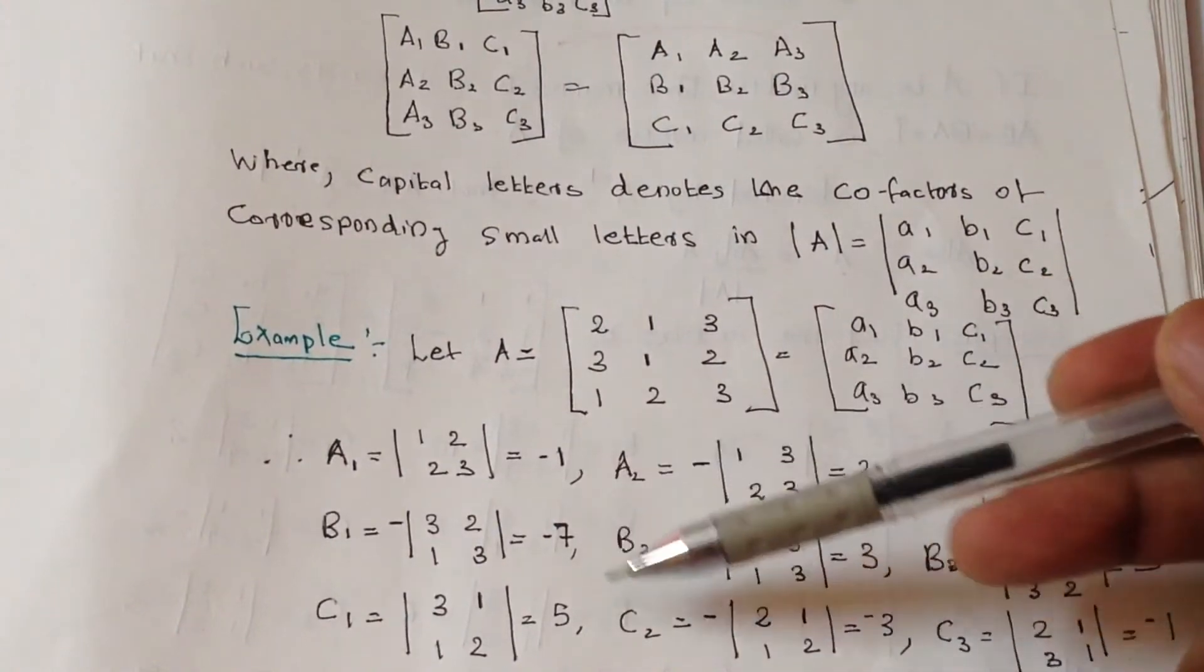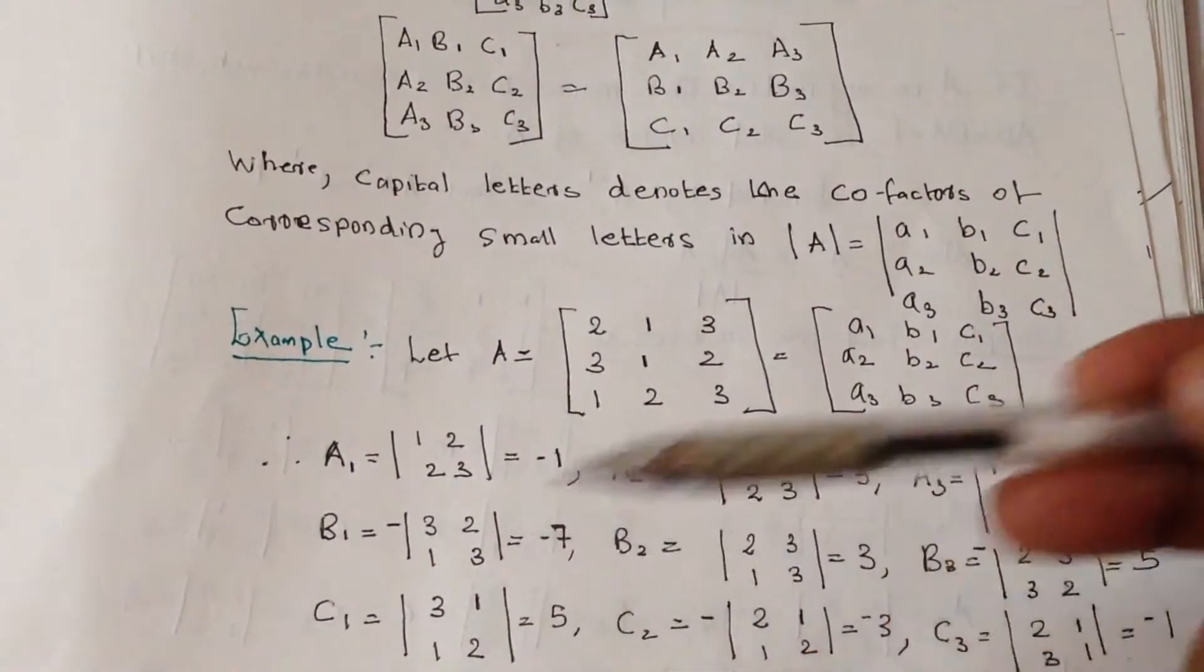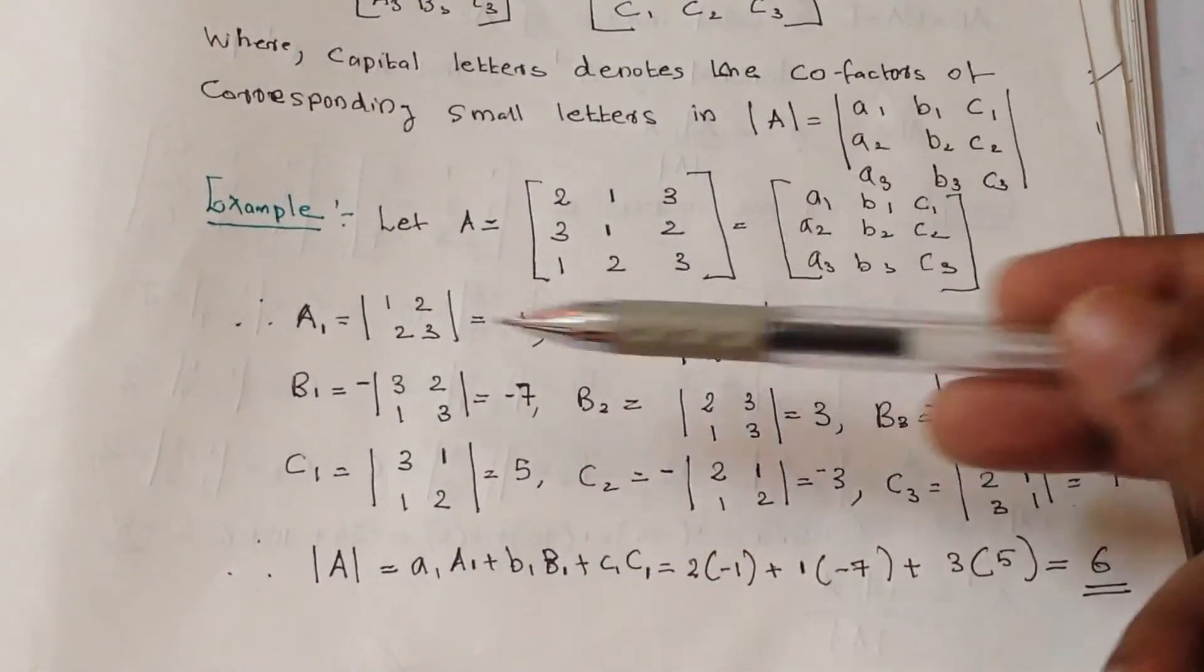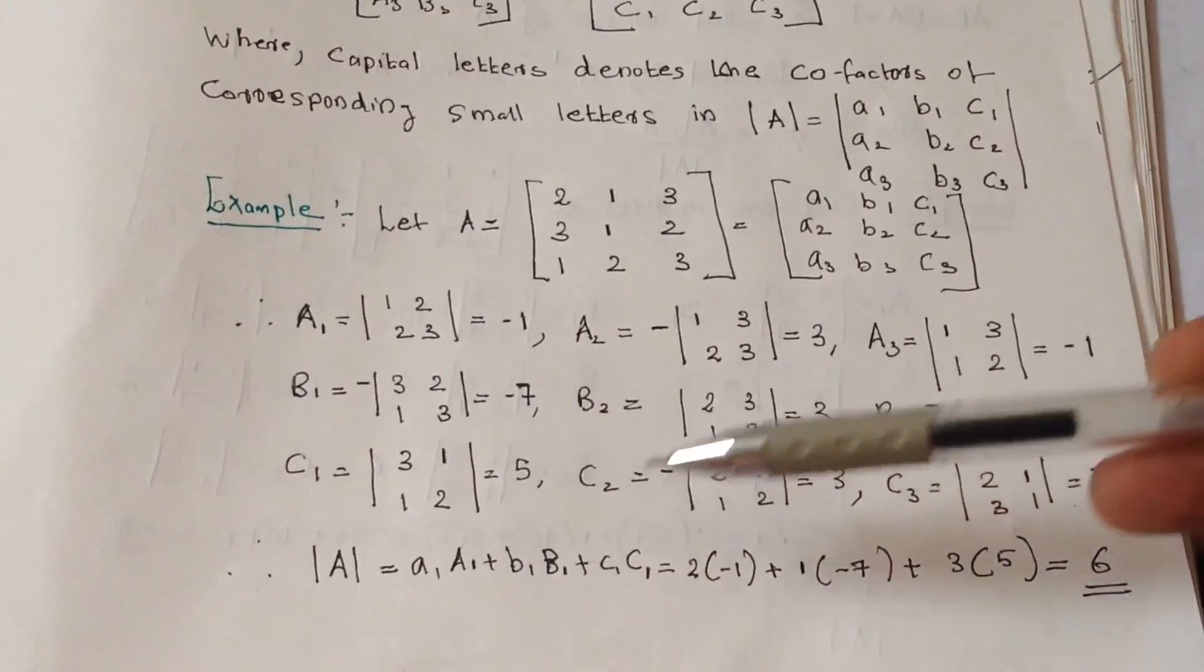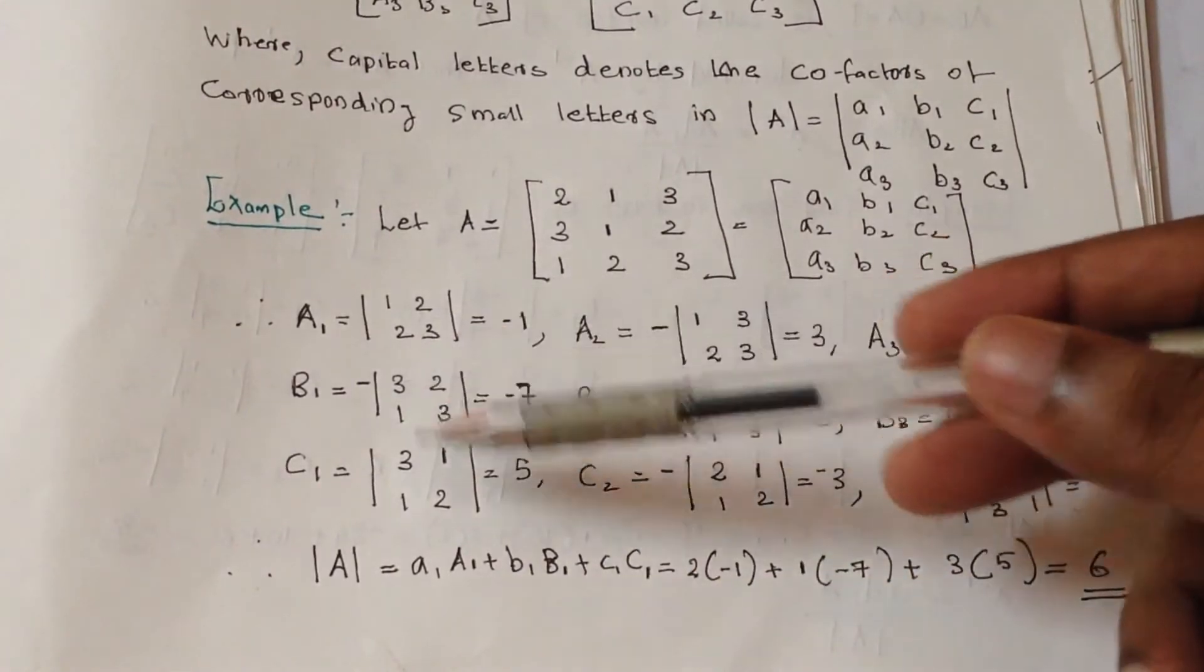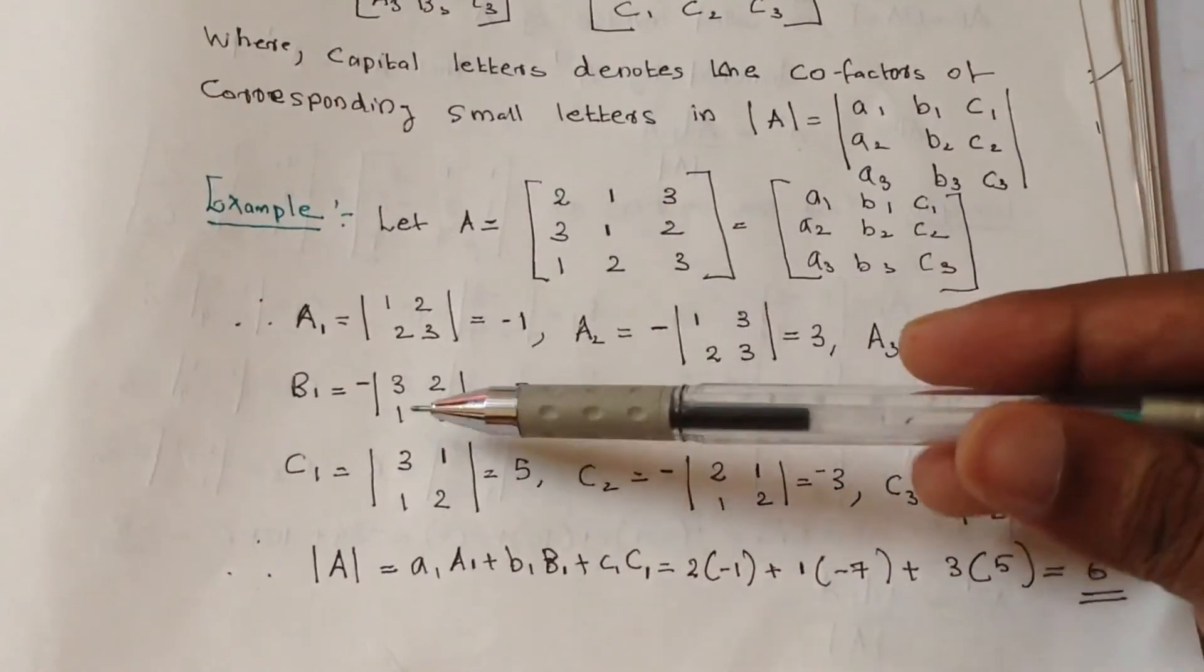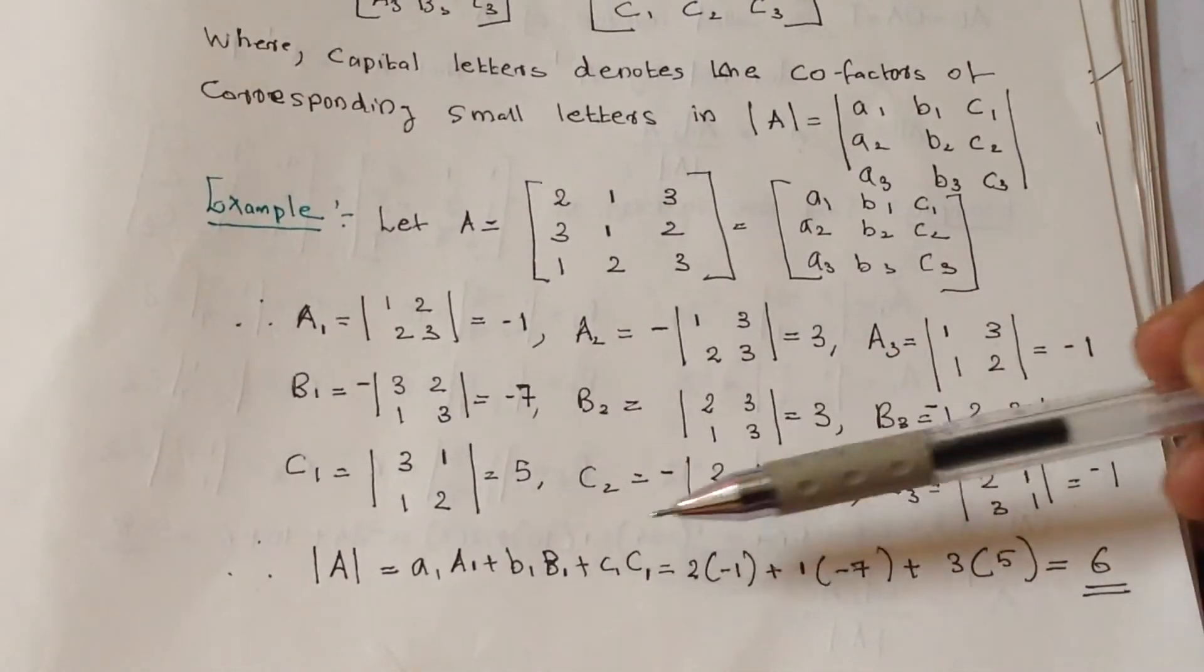Then we will find the determinant A. Determinant A equals A1 into A1 - small a1 into capital A1, plus small b1 into capital B1, plus small c1 into capital C1.